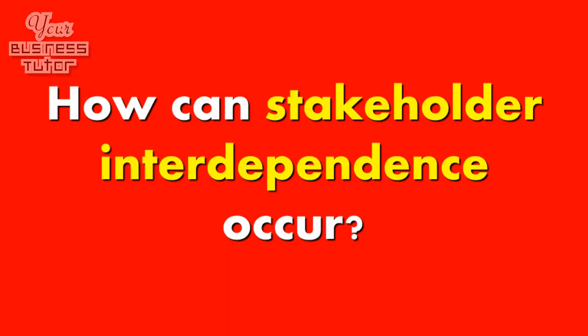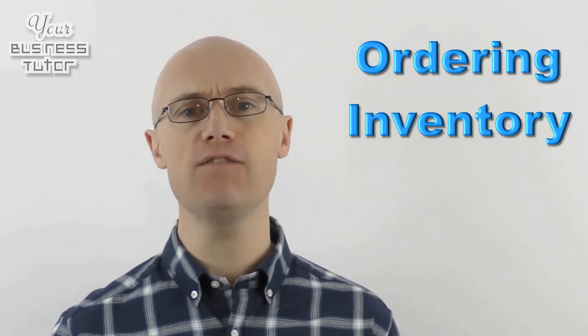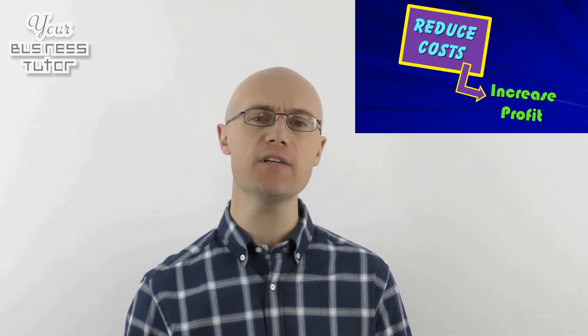So how can stakeholder interdependence occur? The first example we'll look at is between suppliers and managers. Suppliers are interested in a business ordering inventory from them. To ensure this happens, and hopefully so the business orders even more, a supplier may offer a discount for buying inventory in bulk. This would appeal to managers, as the business would be able to obtain inventory at a lower cost, which would help the business increase its profits. This of course would help the manager demonstrate they are doing a good job, which would improve their chances of job security and a pay rise.